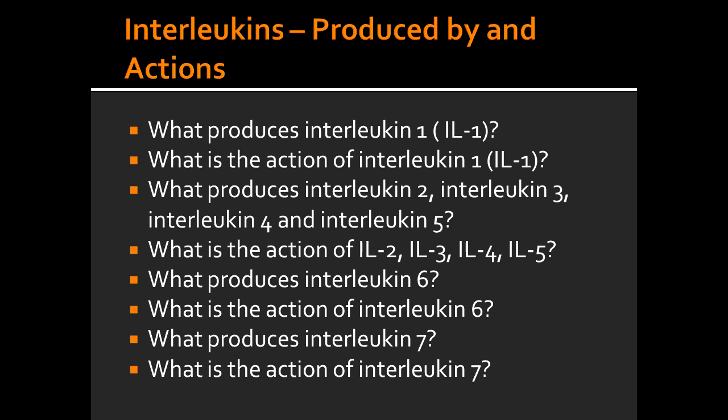What produces interleukin 7? Interleukin 7 is produced by the bone marrow cells. What is the function of interleukin 7? Interleukin 7 also has the job of activating other cells.